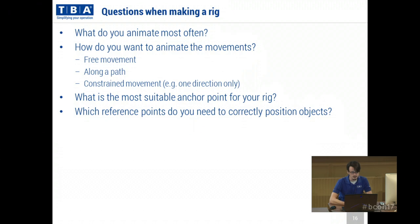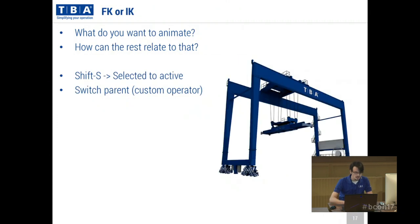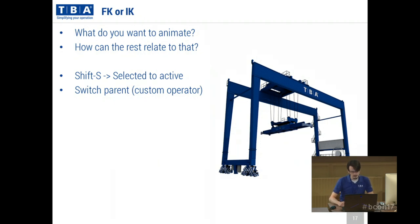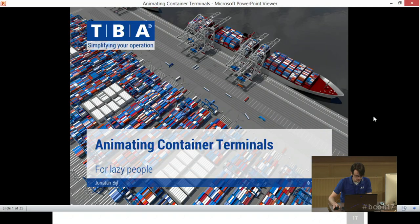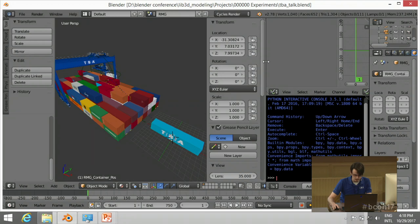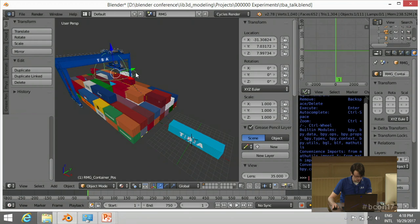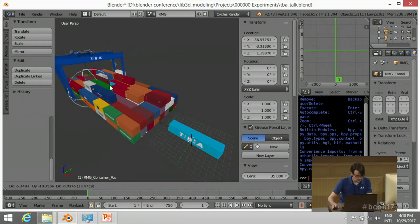When making a rig you have to think about what you animate most often and how you want to animate it — along a path, with free movement, or constrained movement. You also have to think about anchor points and other important reference points. To show this, here I have a stack crane — a crane that drives along the stack.